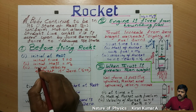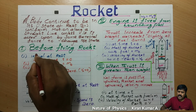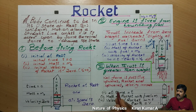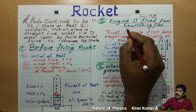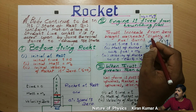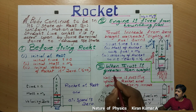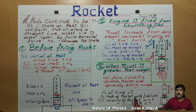There are three conditions for the rocket. First condition: before firing a rocket. Second condition: engine is fired from the launching pad. Third condition: thrust is greater than the weight. We will discuss each one by one.